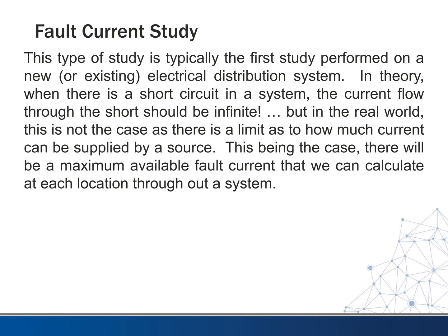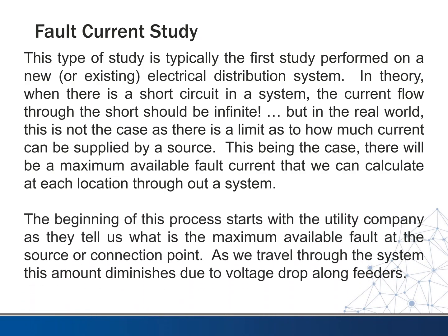So we need to know what that available current is, and how it changes through our system. There will be a maximum available fault current that we can calculate at each location throughout our system. This process starts with the utility company, as they are going to tell us what the maximum available fault is at the source or connection point — usually on the secondary side of their utility transformer. As we travel through the system, this amount is going to diminish due to voltage drop along the feeder, so we need to calculate it all the way throughout our system.